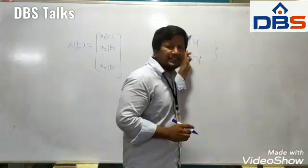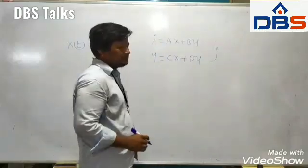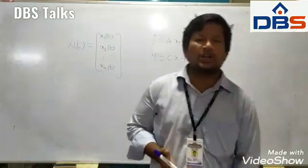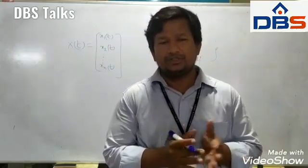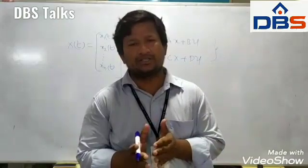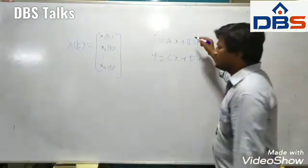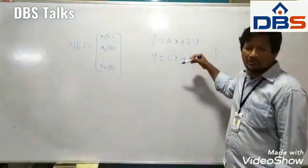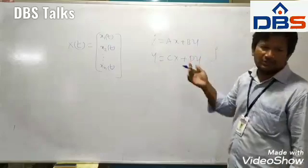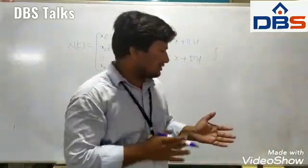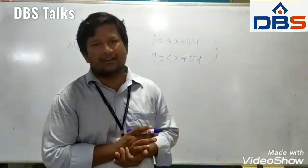The state model is nothing but the combination of the state equation and output equation. The state diagram is the graphical representation of the state model. The state model can be represented in two ways: diagrammatically with the help of a signal flow graph, or it may be a block diagram reduction.